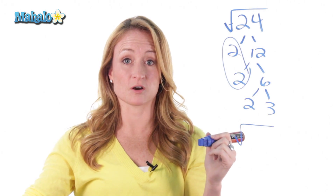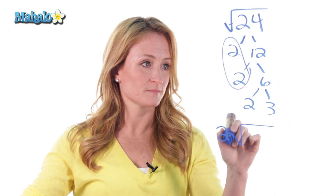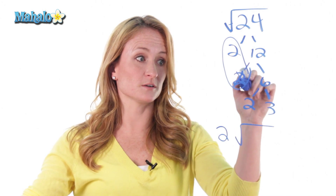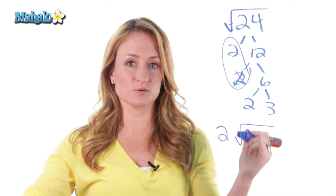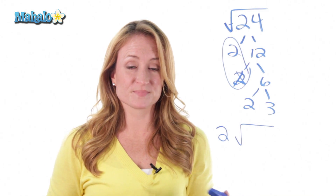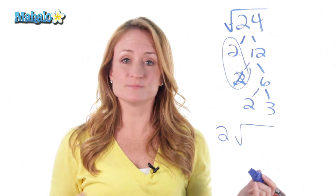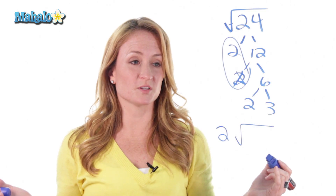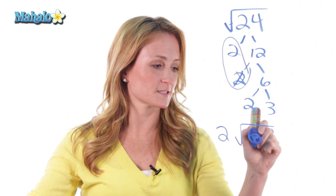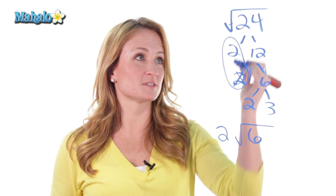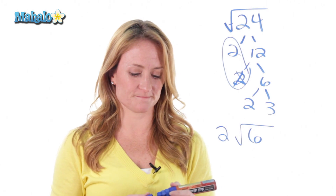So let's bring our trap down. These 2's are ready to get out of the trap — so this one makes it out, and this one disappears. But what do we do with the 2 and 3 that don't have a partner to make it out? If they remain inside, you just multiply them. So we leave it: 2 times 3 is 6. So simplifying the square root of 24 is 2 root 6.